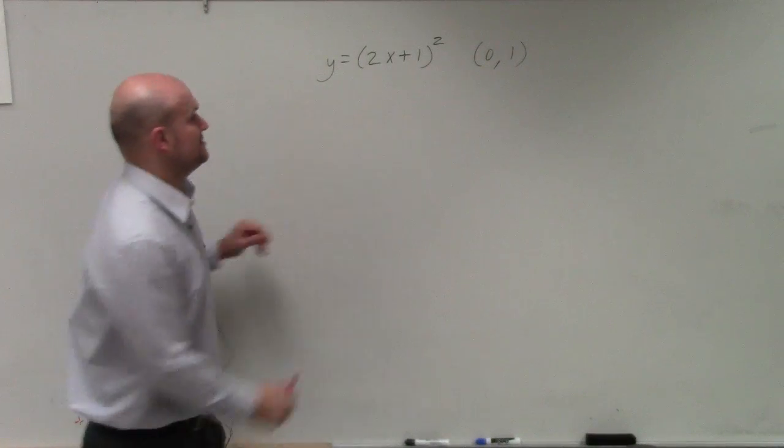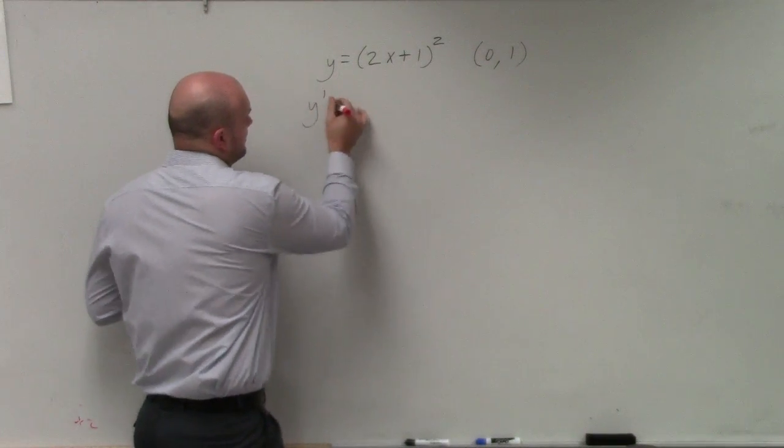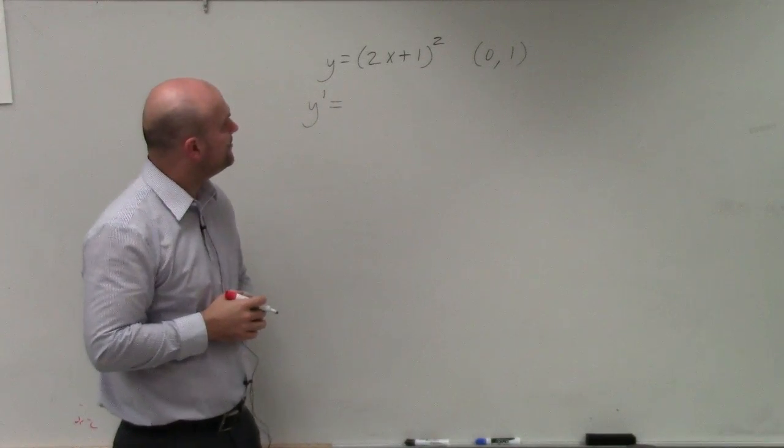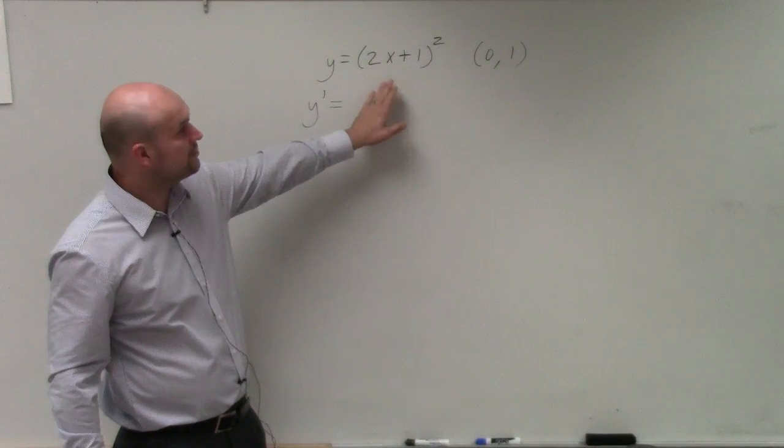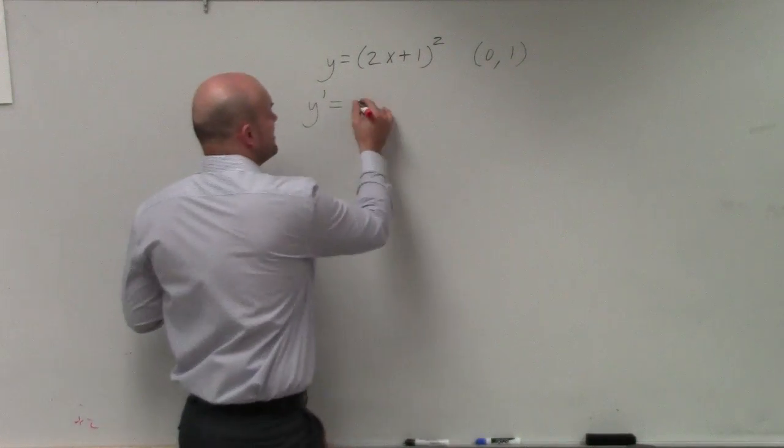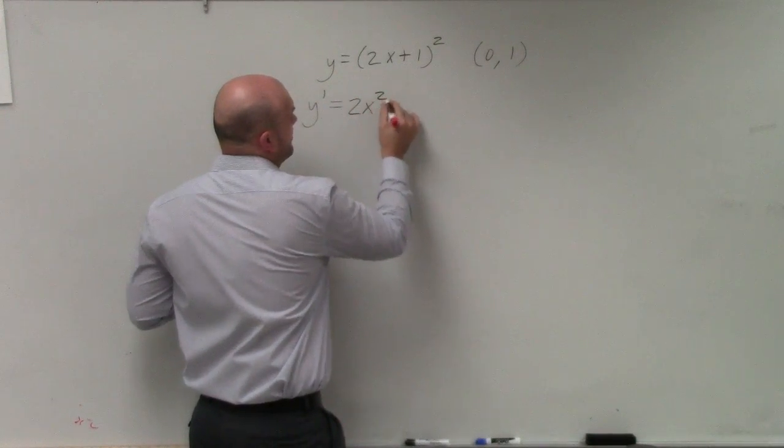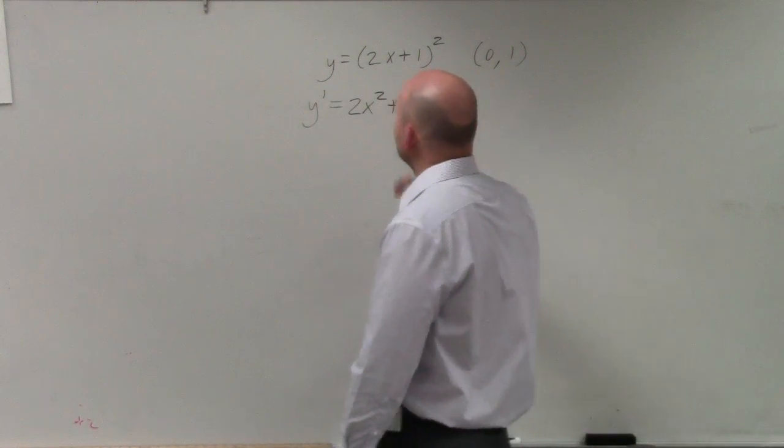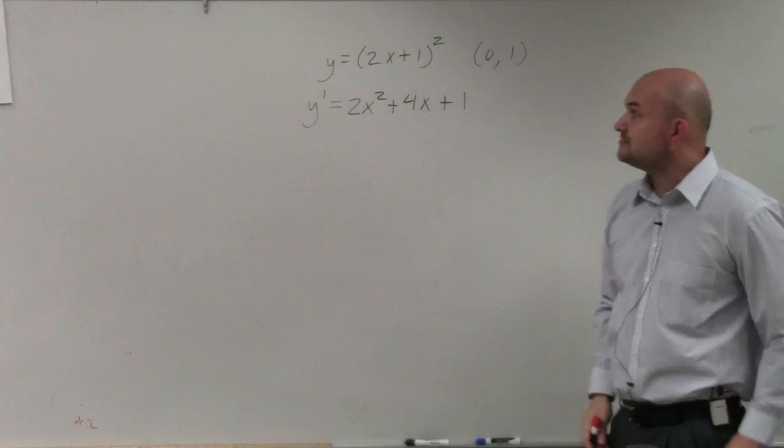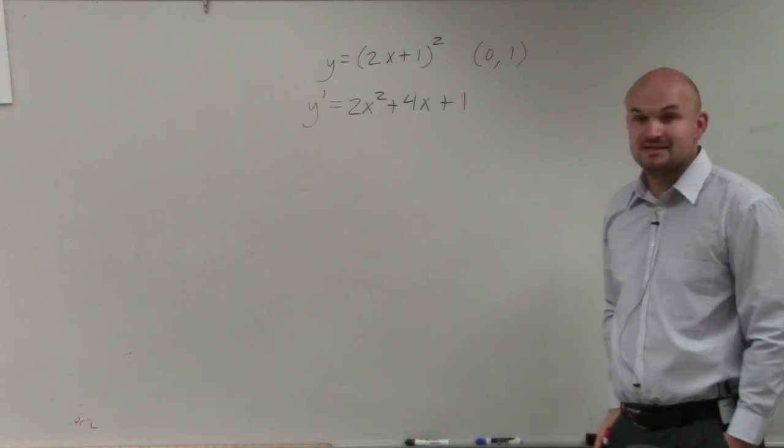So we need to figure out what is the derivative of that function. Well, it's kind of a little bit difficult here looking at this to be able to apply the power rule. So what we can do is, again, rewrite this as 4x² plus 4x plus 1. So if I multiply that out to give me 2x plus 1 times 2x plus 1.